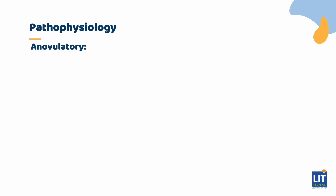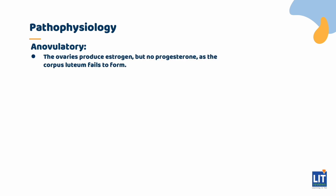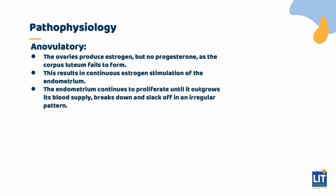The pathophysiology of AUB can be anovulatory or ovulatory. Anovulation is the most common cause, where the ovaries produce estrogen but no progesterone. As the corpus luteum fails to form, this results in continuous estrogen stimulation of the endometrium, causing continuous endometrial proliferation without progesterone-induced bleeding. The endometrium continues to proliferate until it outgrows its blood supply, breaks down, and sloughs off in an irregular pattern.